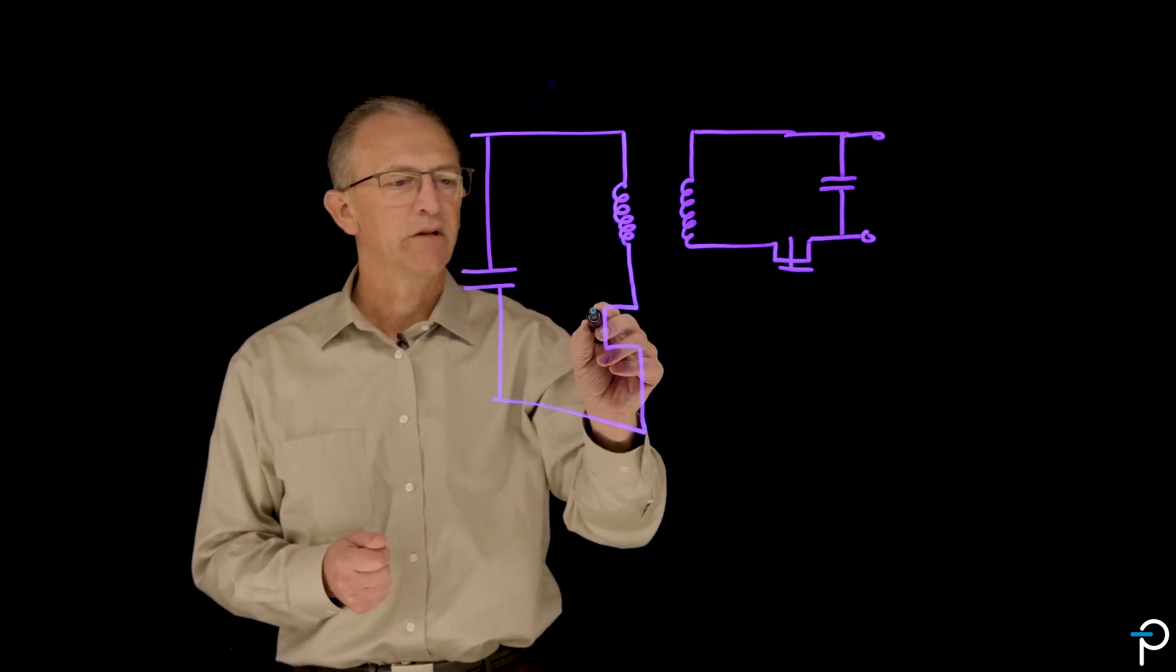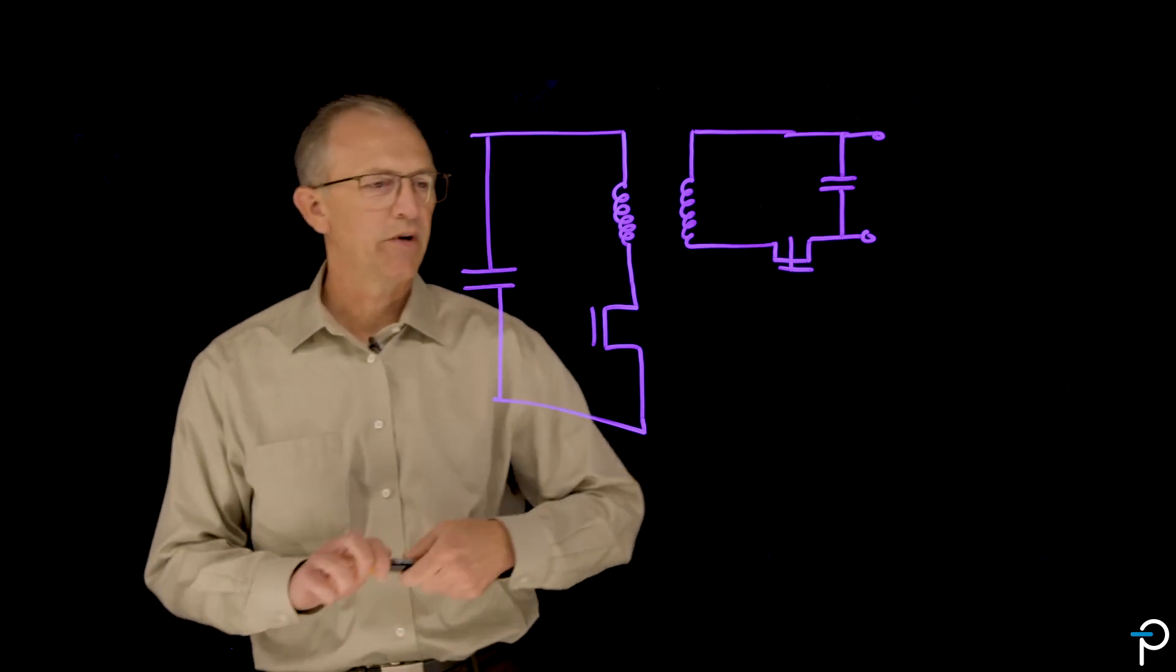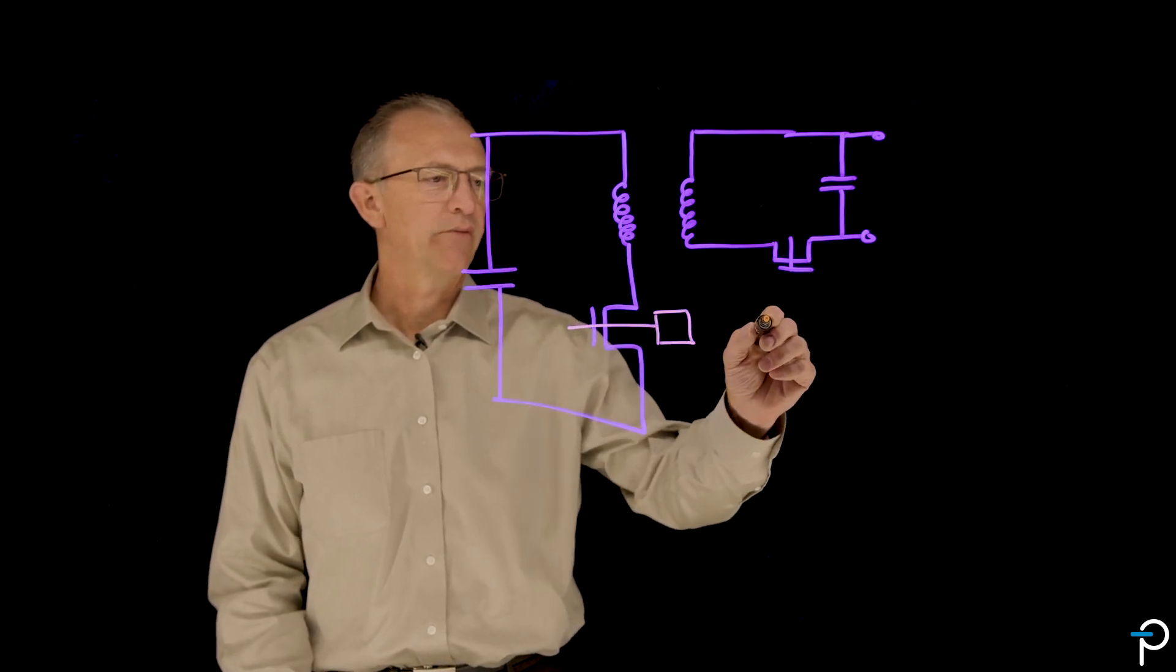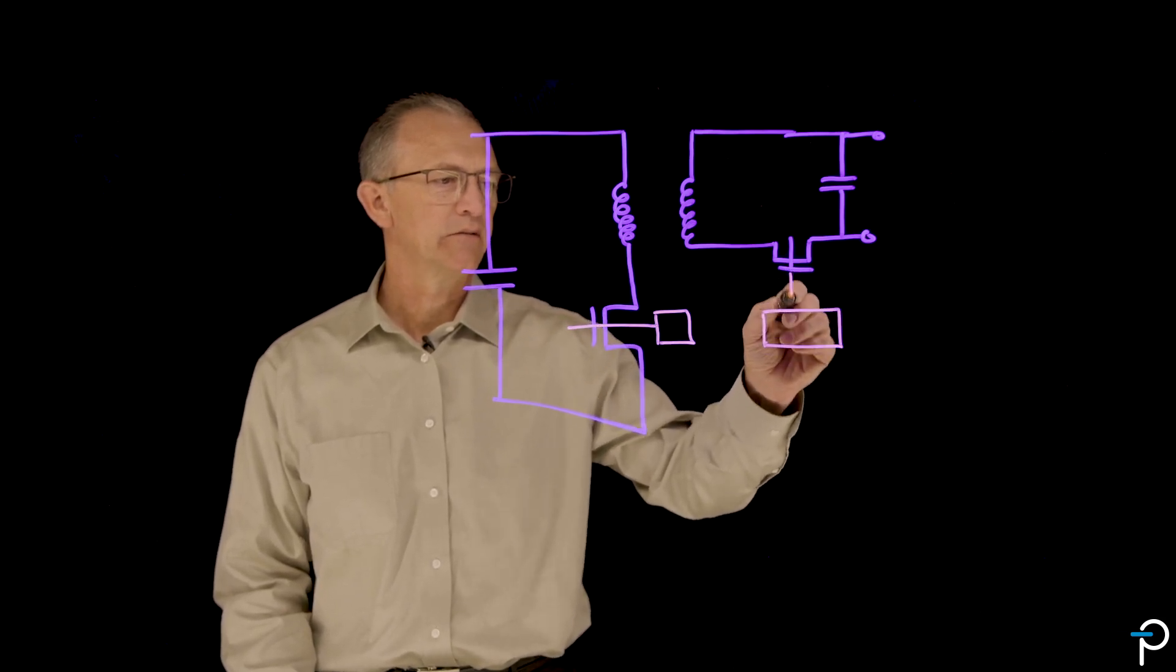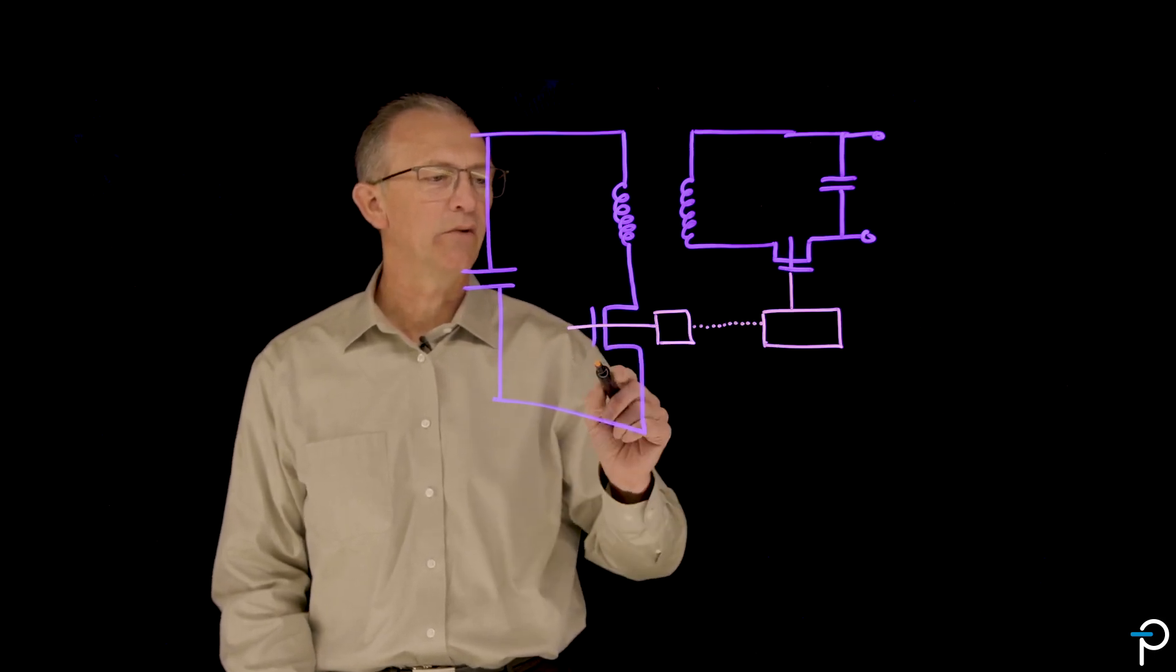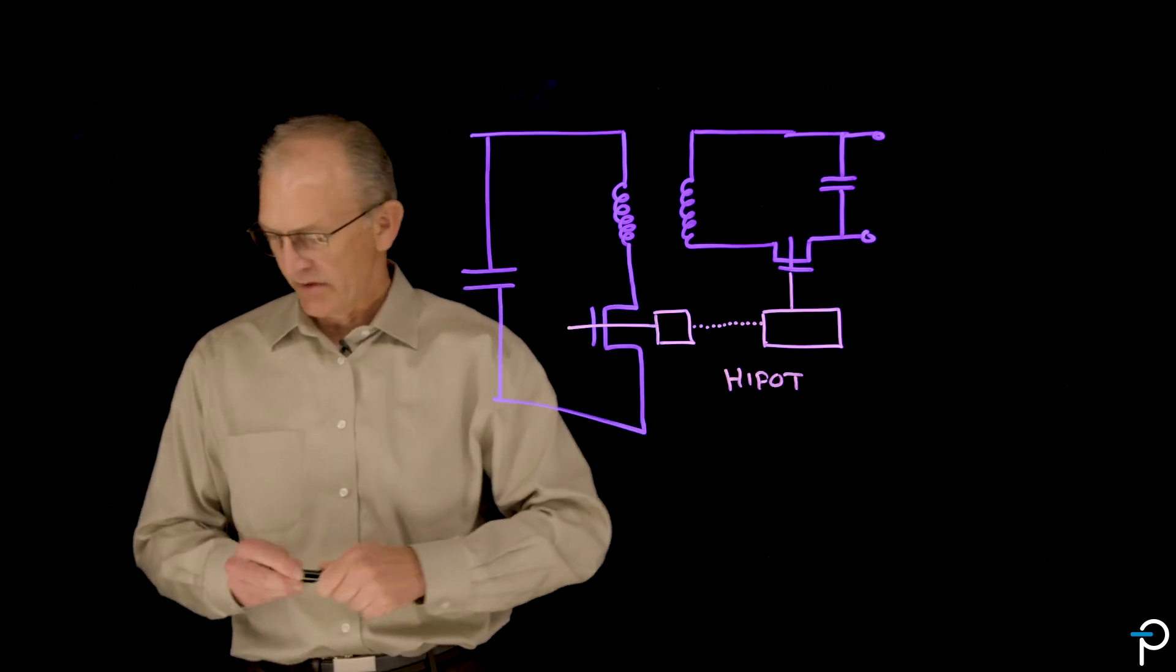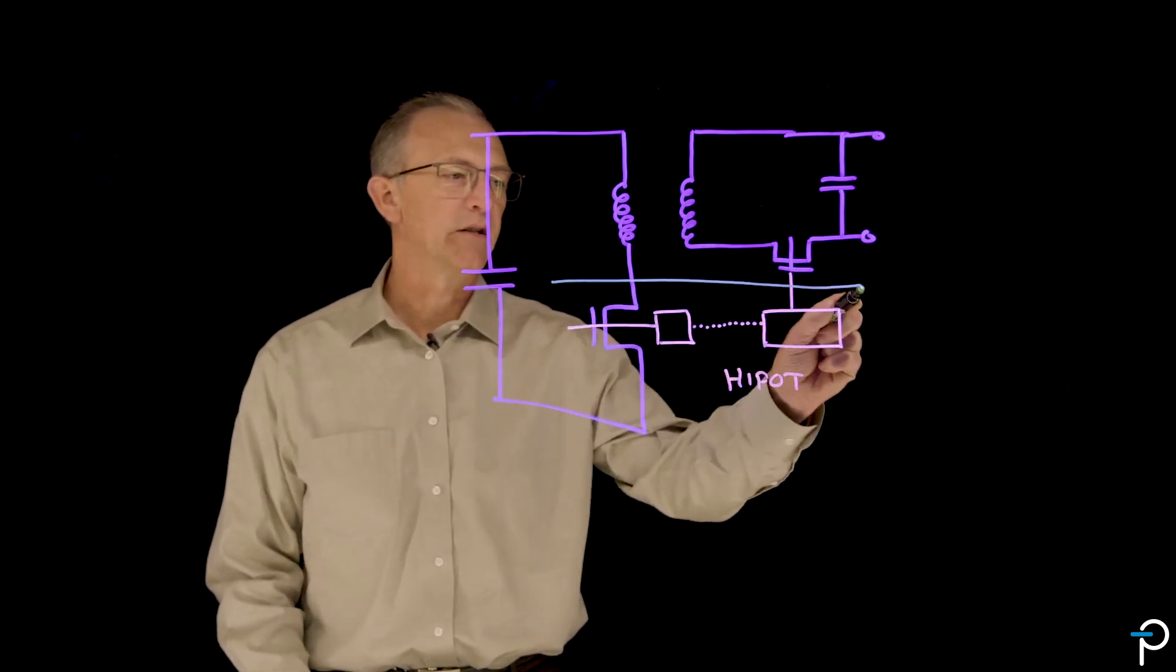Now, the PI InnoSwitch product incorporates controllers for the primary side of the GaN and for the secondary side of the SR. And we have the FluxLink coupler, which provides a high part isolated connection between the two. And all of those components are included inside a single package.